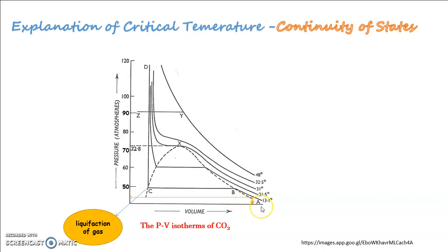The other isotherm ESGH, you can see, at 21.5 degree Celsius, shows a similar behavior. This is the path ESGH. Here, the liquefaction commences at a higher pressure than the first, higher pressure, nearly 60. And the horizontal portion FG, representing decrease in volume, becomes smaller as compared to the former.